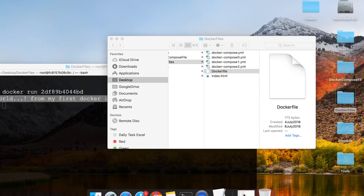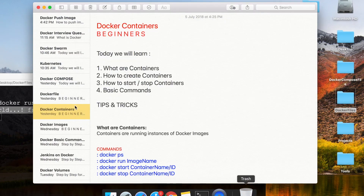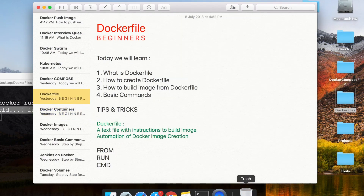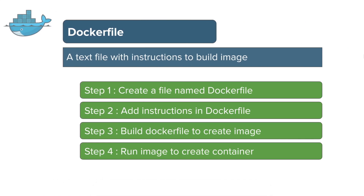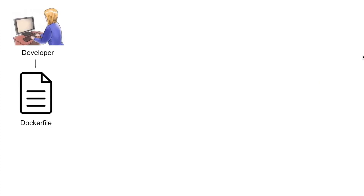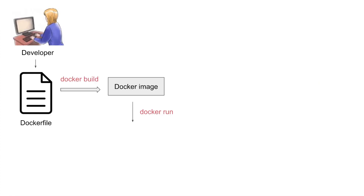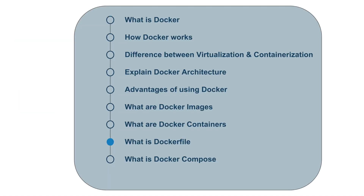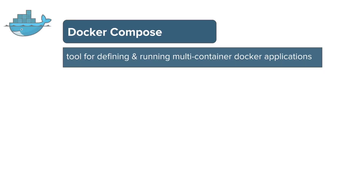If you want to go into more details, I have a separate session on Dockerfile you can watch. These are the four basic steps to create and run a Dockerfile: we built a Dockerfile to create a Docker image, and we ran a Docker image to create a Docker container. Now let's see what is Docker Compose.